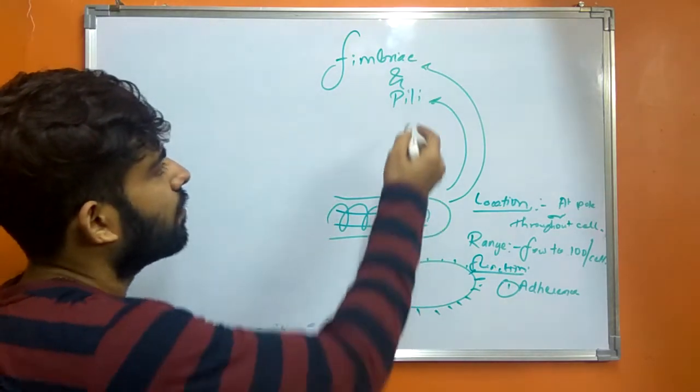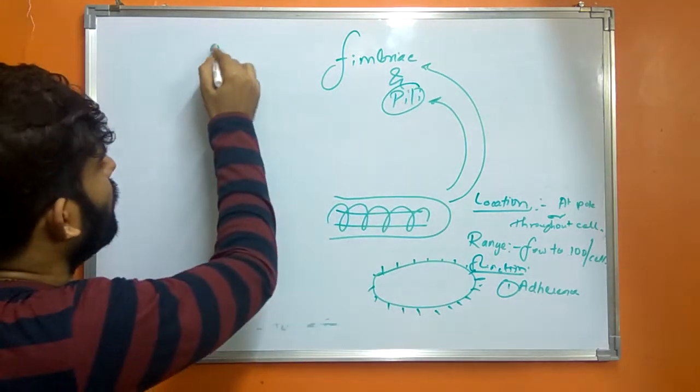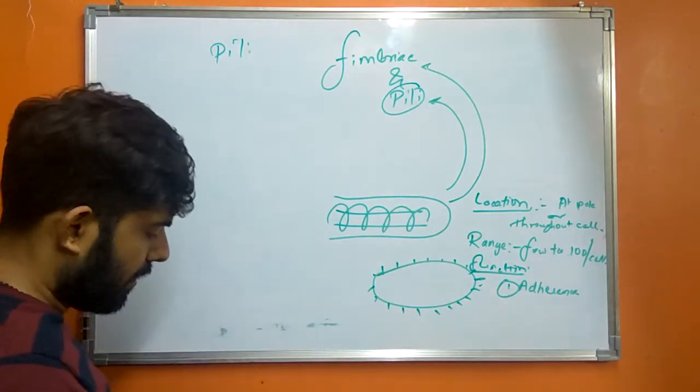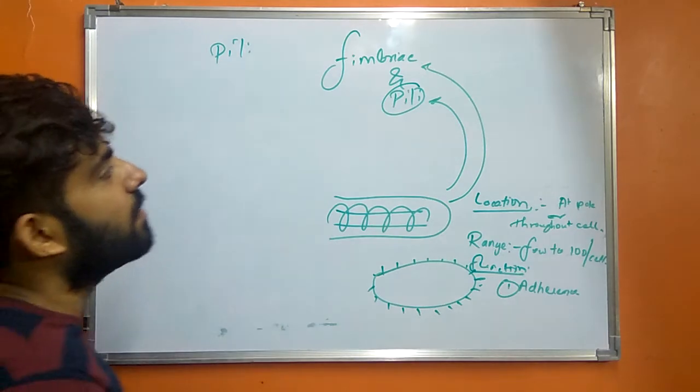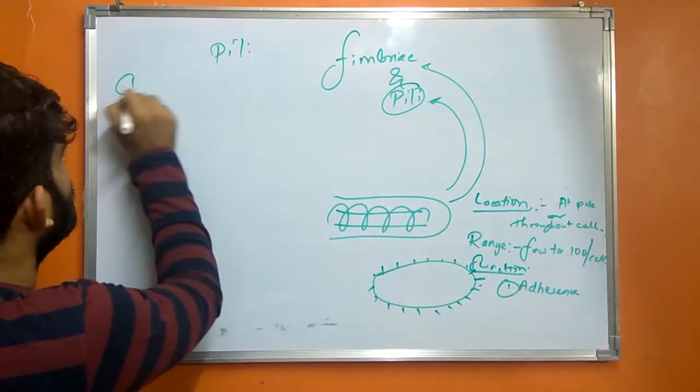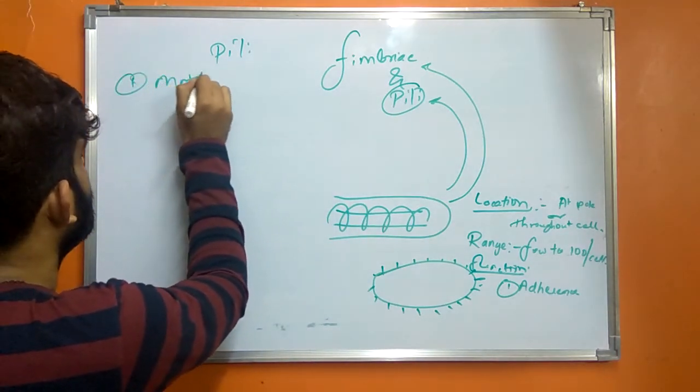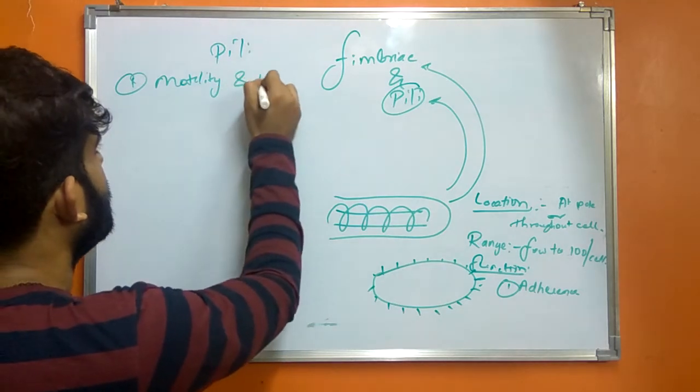Another structure is Pilli. Pilli are generally longer than Fimbria. Their main function is motility and DNA transfer.